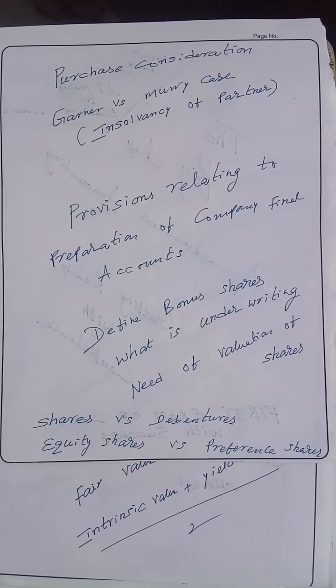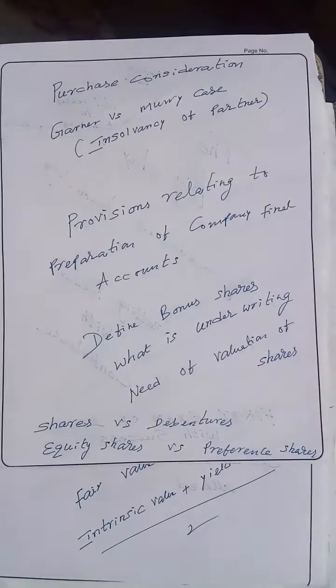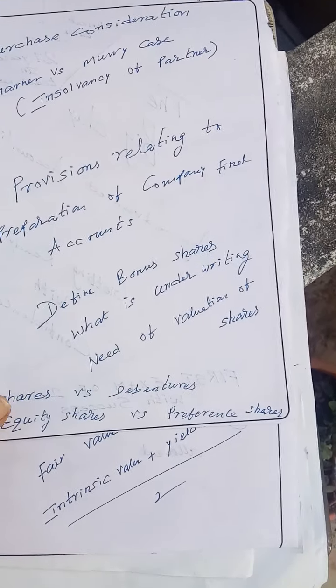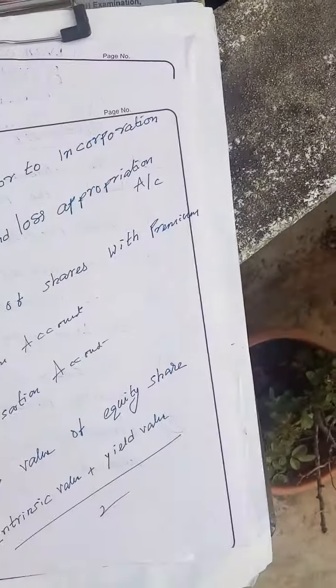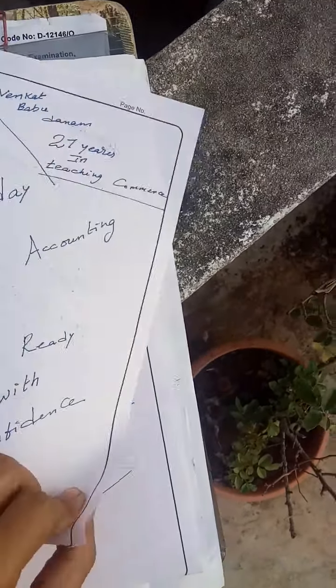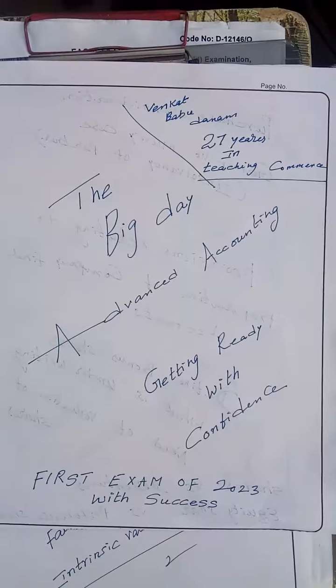The need for valuation of shares is covered in unit number five. Shares versus debentures, and equity shares versus preference shares — this theory is in unit number three. This is an at-a-glance revision before you go to the exam.